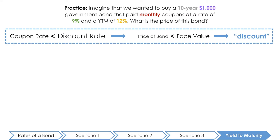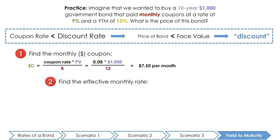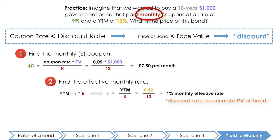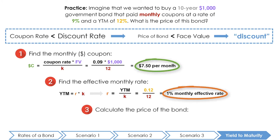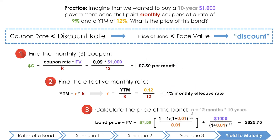We can solve for the price of this bond in three easy steps. First, we need the dollar amount of the monthly coupons using the coupon payment formula. Second, we need to find R — the effective monthly rate of return — which we will use as the discount rate in the bond valuation formula, because the discount rate represents the opportunity cost of using one's money to buy this bond. Lastly, we use C from step one and R from step two in the bond valuation formula. Following these three steps, the price of the bond is $825.75, selling at a discount as expected. A yield to maturity of 12% means we expect to earn an annualized rate of return of 12% by buying a bond worth $1,000 in 10 years for $825.75 today.